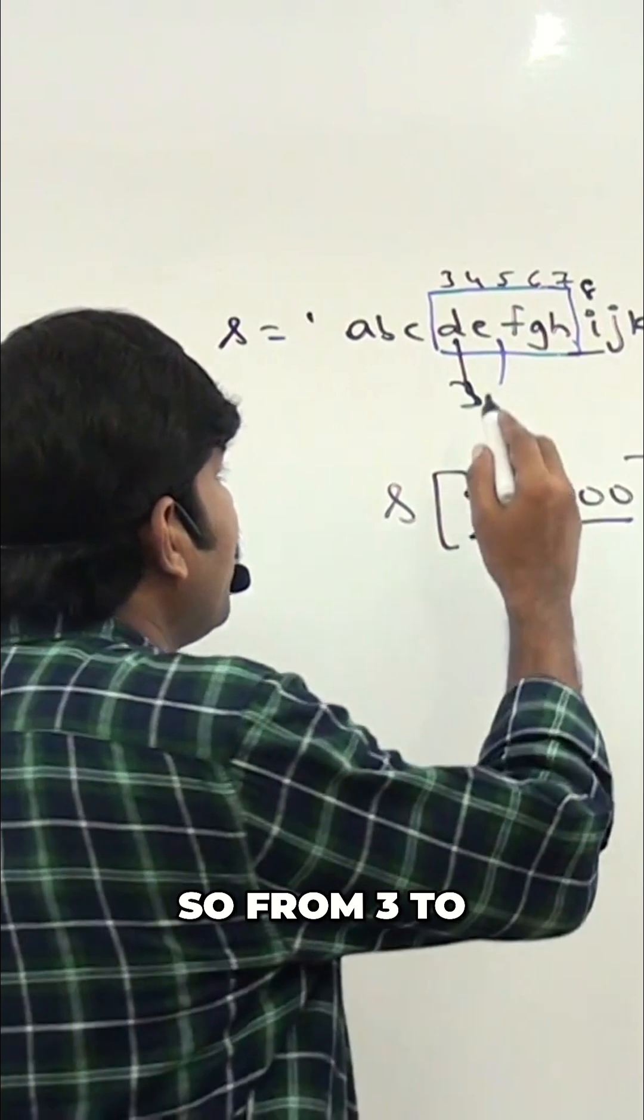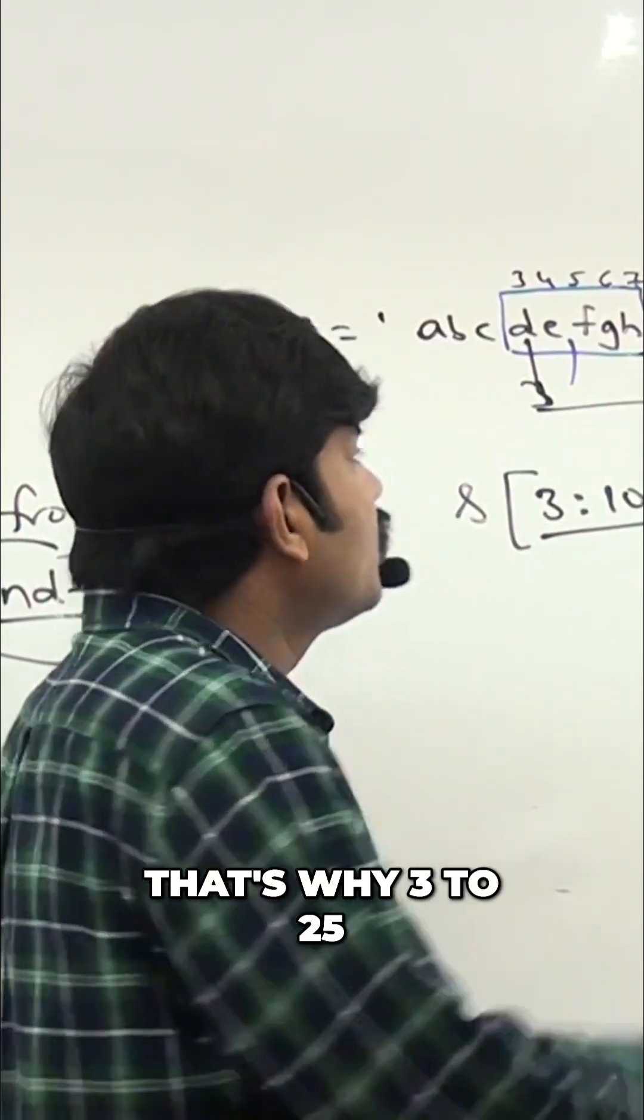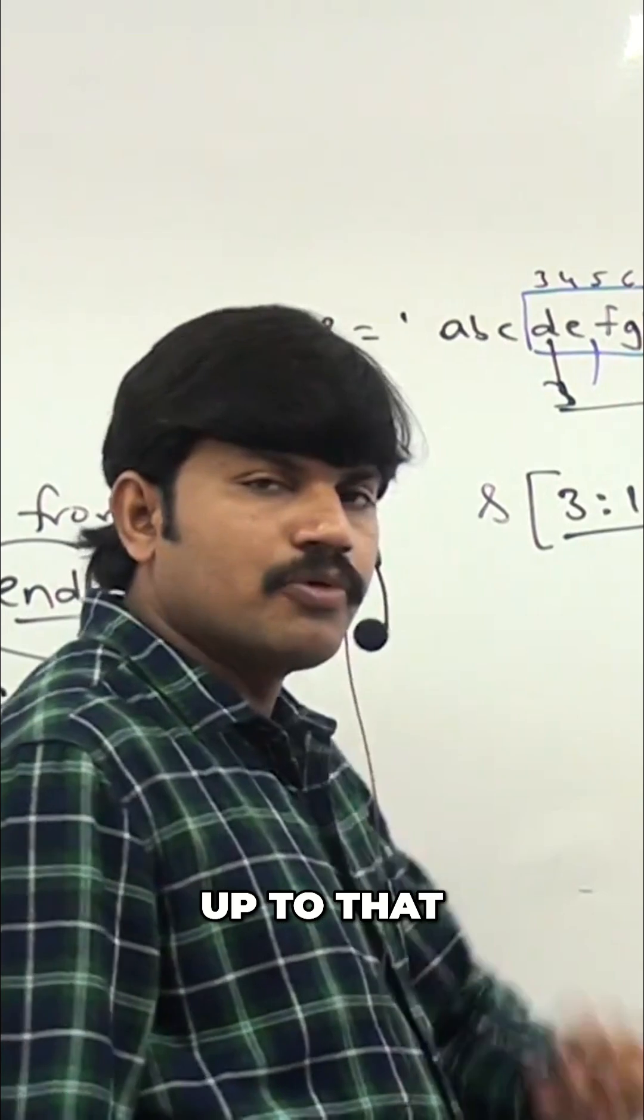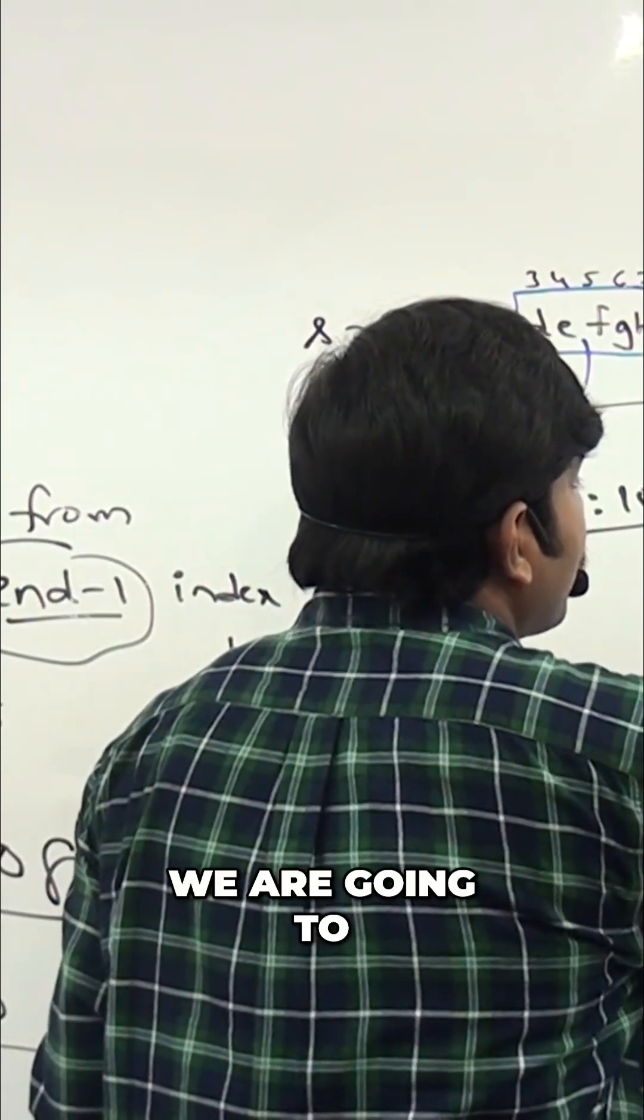So from 3 to up to 25, only characters are there. That's why 3 to 25, up to that, whatever characters are there it is going to consider. So D to Z we are going to get everything. We never going to get index error.